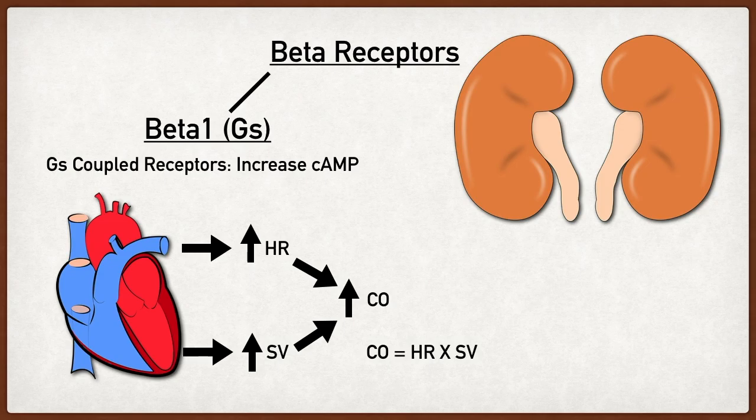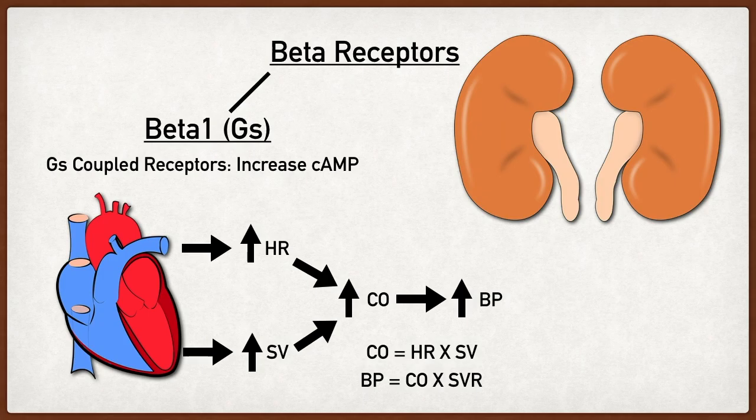Blood pressure equals cardiac output times systemic vascular resistance. So if we increase cardiac output, we're going to increase blood pressure. This makes complete sense — think about the sympathetic nervous system. When we're in a situation of danger, fear, anxiety, stress, or exercise, we're going to want to increase blood pressure and cardiac output. We activate the beta 1 adrenergic receptors in the heart to increase cardiac output, which in turn increases blood pressure.